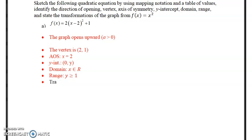A list of transformations. So the transformations are... There's no reflection, because the a-value, the 2 in front of the x minus 2 all squared, that is positive. So there's no reflection.